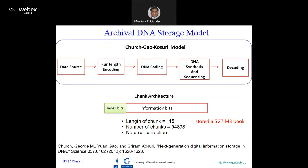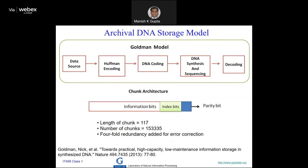This is the archival DNA storage model. They use what is called DNA encoding. The chunk architecture: length of chunk was 115. They stored a 5.27 MB book with no error correction — this paper appeared in Science by George Church. Goldman added fourfold redundancy and used Huffman coding — specifically ternary Huffman coding. You might have seen binary Huffman coding, but this is ternary.